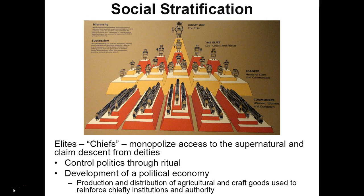This can be seen as evidence of social stratification — the emergence of distinct social classes, with an elite class and then commoners. In Mississippian society, elites were chiefs who monopolized access to the supernatural through their claim on the mounds, their residences on them, and their exclusive use of the temples on top. They would often claim descent from deities.